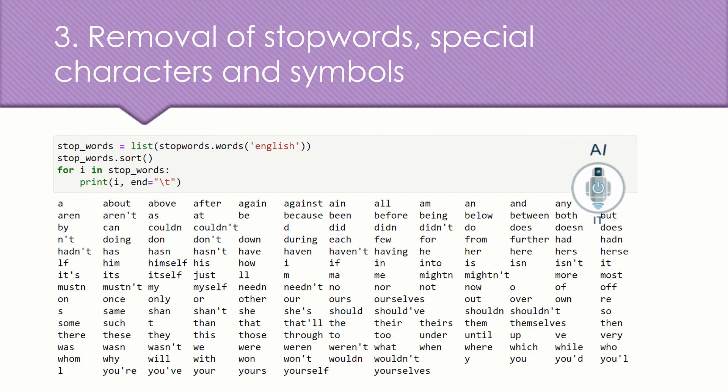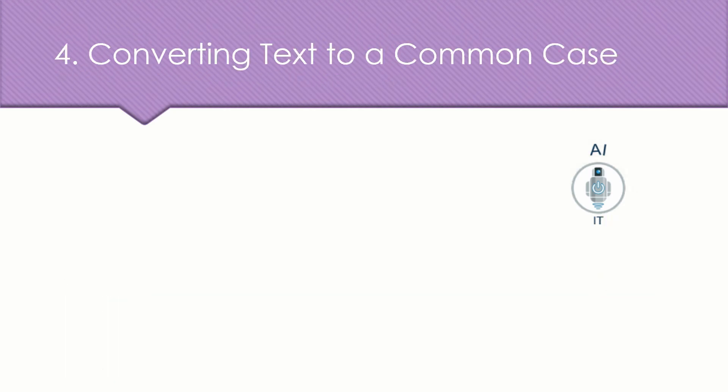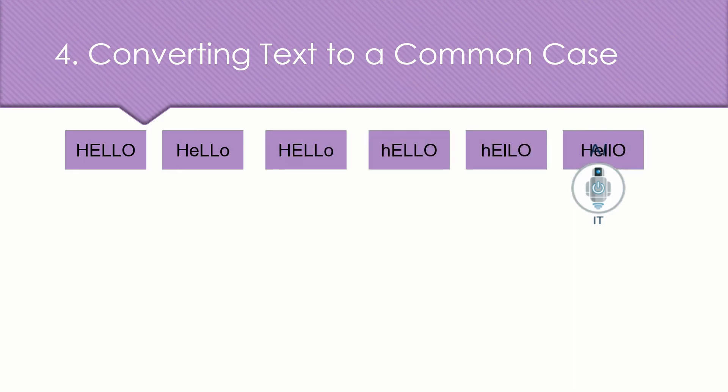Let us now understand the fourth step which is to convert the text to a common case. Once the stop words are removed, we convert the whole text into similar case and preferably lower case. We may be coming across a particular word all in capital letters or few characters like this in capital letters or some characters in small letters. So what we are going to do with this is we are going to convert it all into lower case preferably. Hence, it would be treated as the same word by the machine.